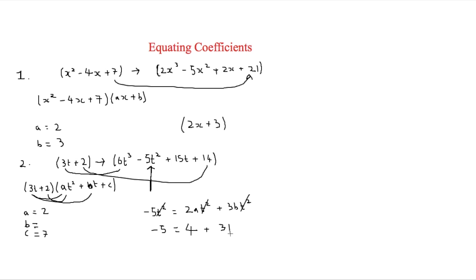To get 3b is equal to minus 9. And then b is equal to minus 3. So therefore your final answer is equal to 2t squared minus 3t plus 7.